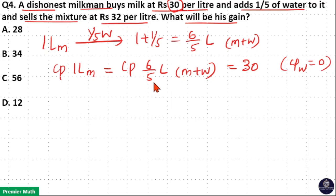Now, if 6 by 5 litre mixture costs Rs. 30, then we need to find out the cost price of 1 litre mixture. Which is equal to 30 divided by 6 by 5. 6 goes 5 times in 30, so 5 into 5 is Rs. 25. Cost price of 1 litre mixture is equal to Rs. 25.